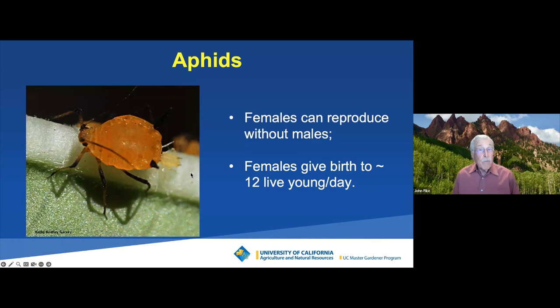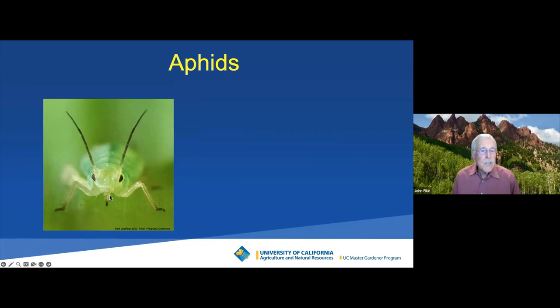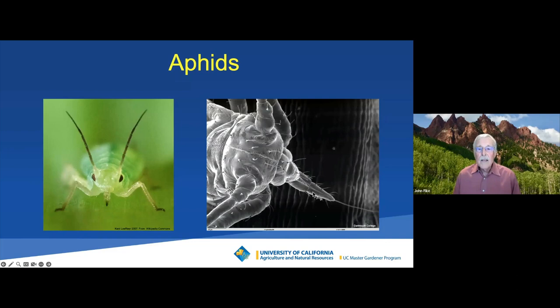What do aphids do? They have what are called piercing, sucking mouth parts — a stylet-type thing they push down into the plant and suck the juices out. That's why they can cause leaf curling and, on little plants, they can cause the plant's demise. These juices are heavy in sugar, but an aphid needs proteins to grow and reproduce. The juices in the plant are not protein heavy, so aphids have to suck out a lot of juice to get the protein they need, and they have lots of excess sugar.